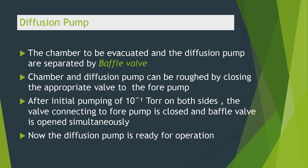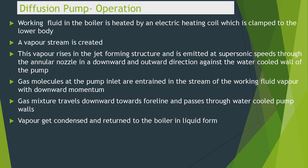Now the diffusion pump is ready for operation. The working fluid in the boiler is heated by an electric heating coil clamped to the lower body, creating a vapor stream. This vapor stream rises in the jet-forming structure and is emitted at supersonic speeds through the annular nozzle in a downward and outward direction against the water-cooled wall of the pump.